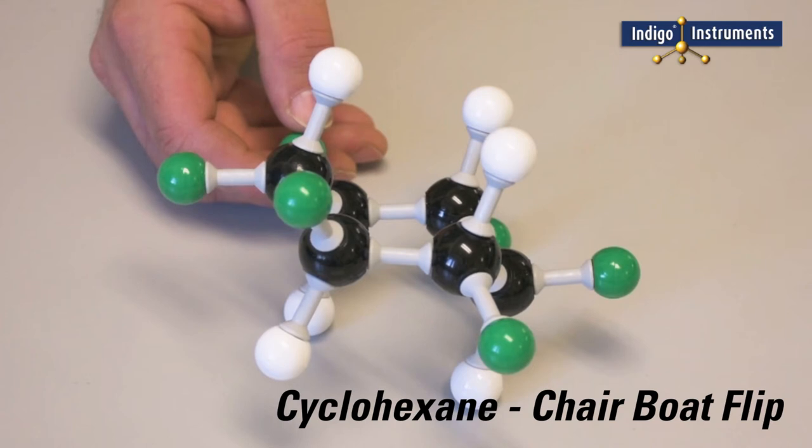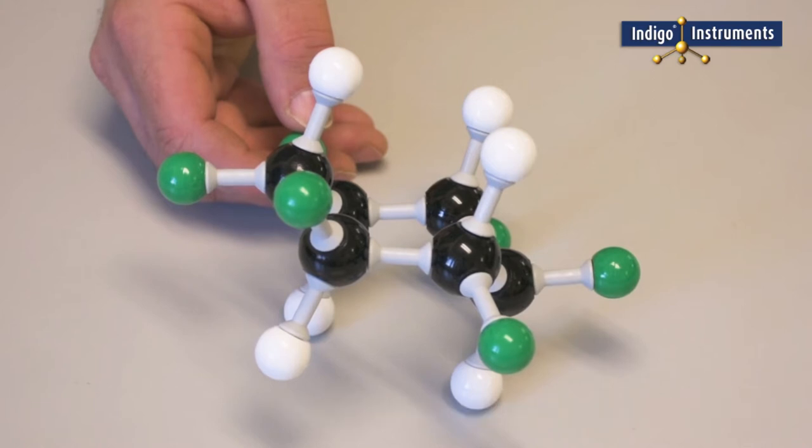Chair boat flip and ring inversion of cyclohexane can be shown using our molly mod models. The chair conformation of cyclohexane is the lowest energy state of the ring.